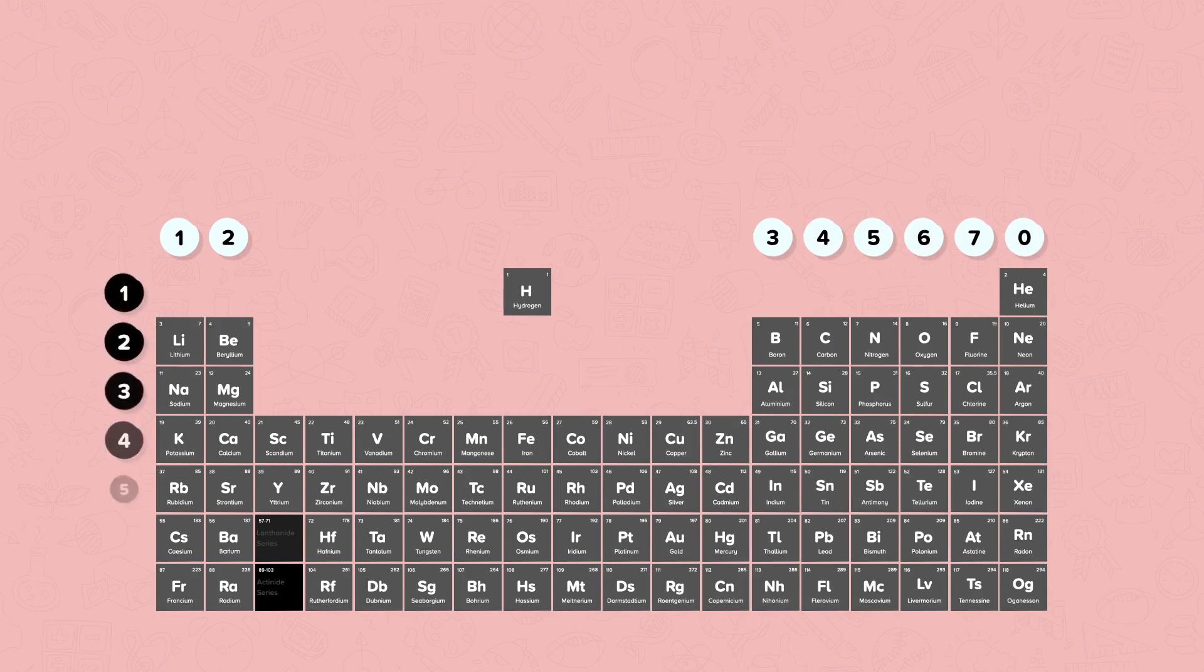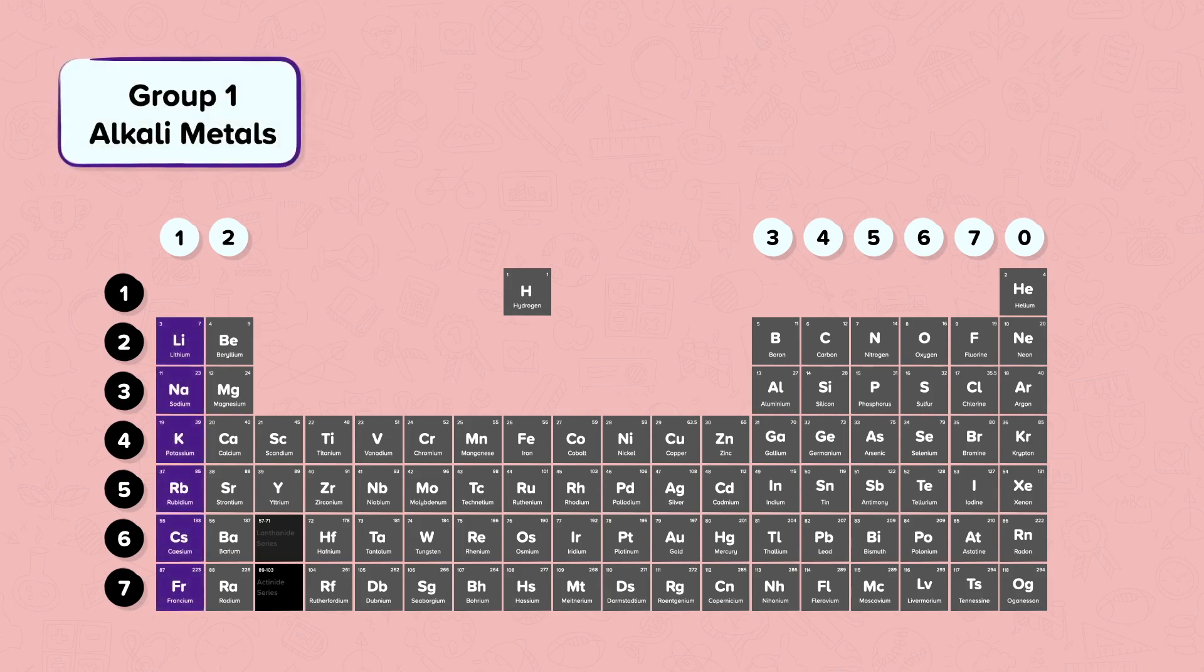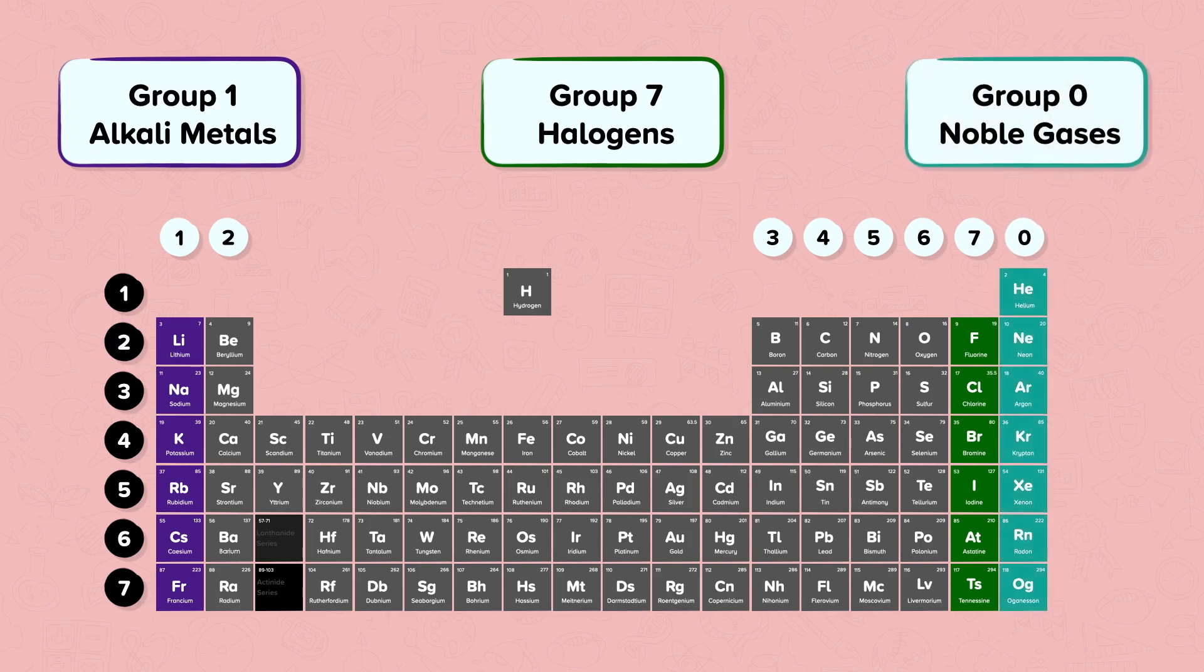The rows of the periodic table are called the periods and these tell us how many electron shells there are in the atom. Group 1 is known as the alkali metals. Group 7 is known as the halogens and group 0 is known as the noble gases.